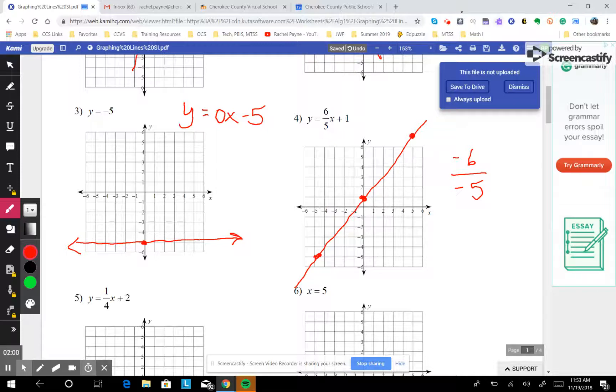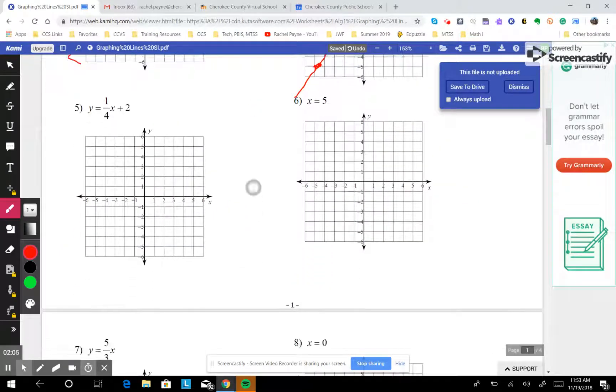It's still the same line, and you can keep going up forever. Rise 6, run 5, rise 6, run 5. It'll keep going up forever.